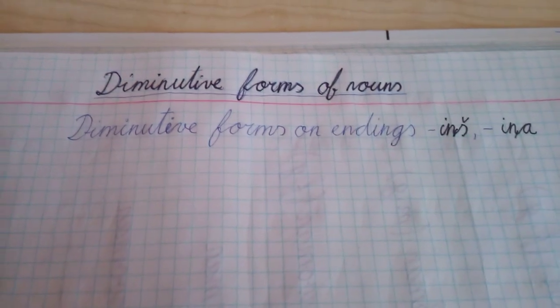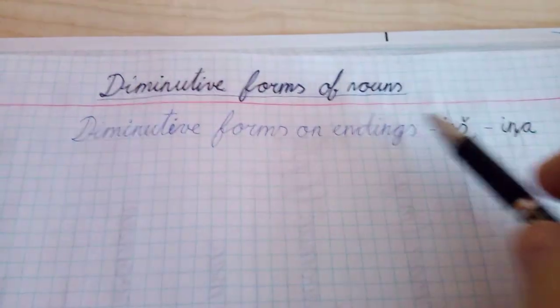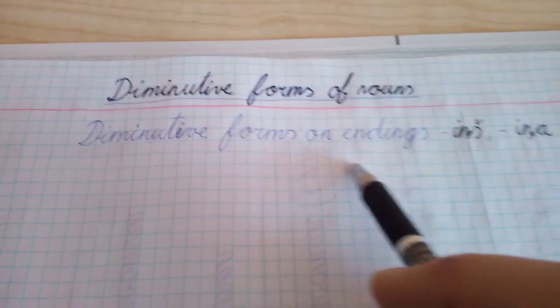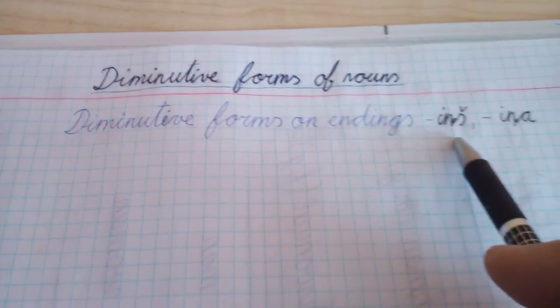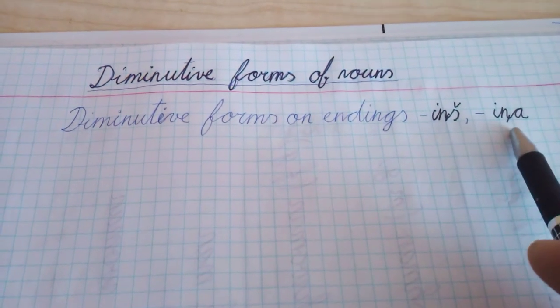Hello, dear watchers. Today is about diminutive forms of nouns, and the first diminutive form uses endings -iņš and -iņa. -iņš is masculine and -iņa is feminine.